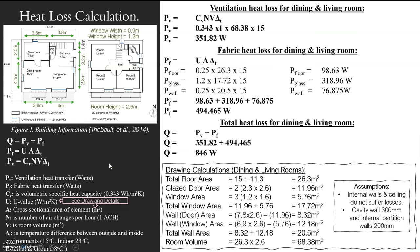You can get the U-value by doing a calculation — you need to see a previous video about that. However, once you have those U-values, that's fairly simple as long as you've got them for each element. For each element, you need to know the cross-sectional area, because your U-value is how quickly heat moves through that material, but you also need to know how much of that material it's going to move through.